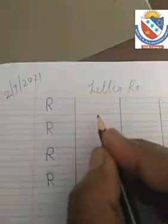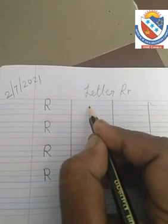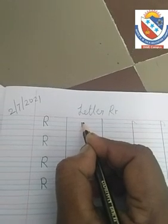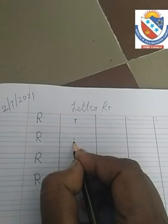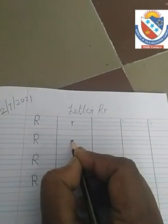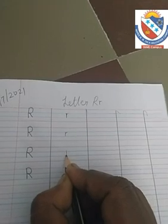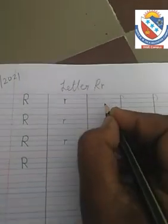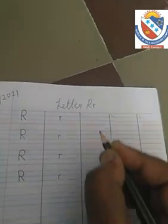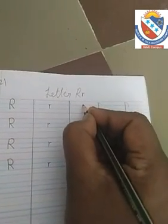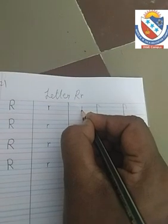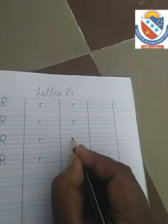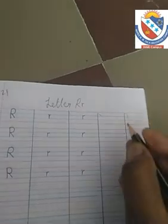Now, how to write baby R — small r. Start from the first blue line to the second blue line, make a standing line. Then go back to the first blue line and make a small curve line. Standing line from the first blue line to the second blue line, go back to the first blue line, end with the curve line. This is baby R, which means small r.